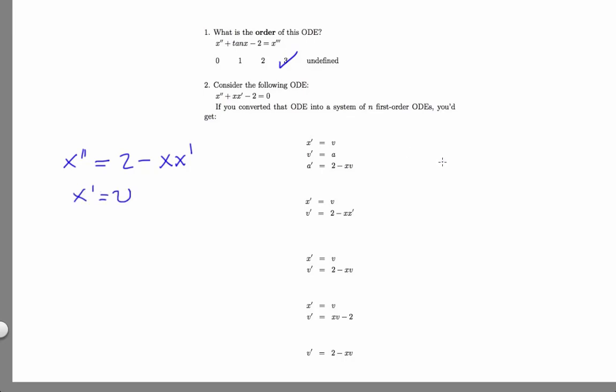If I had a third-order ODE, I'd have to define two helper variables. They'd look something like x prime equals v, v prime equals a. But here, I just need one.